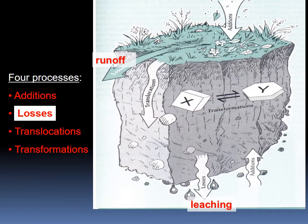Losses occur when you lose something entirely from the soil. For example, when rain falls and water flows over the surface, you might lose soil, minerals, or organic materials from the top, which flow away with the water. You might also lose materials from below — for example, some materials can be moved from the soil and lost through leaching into the groundwater.